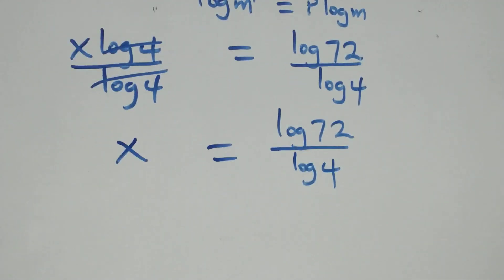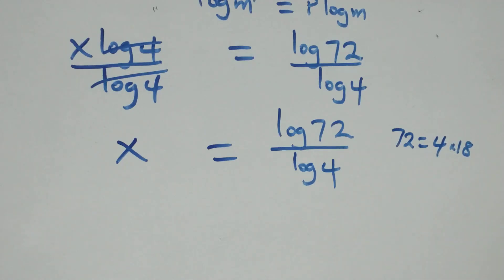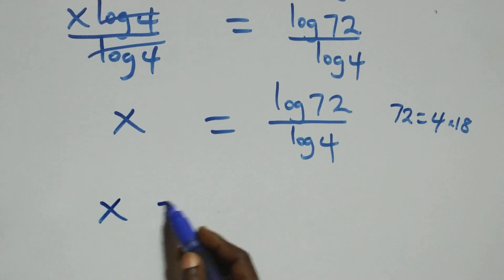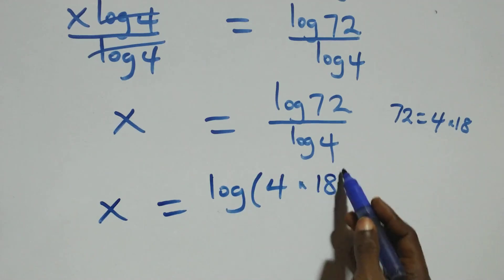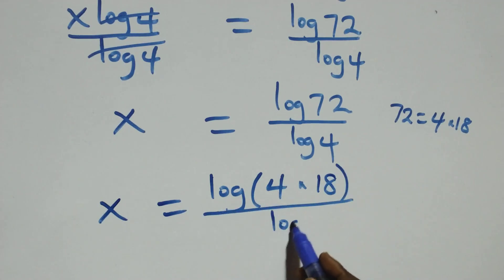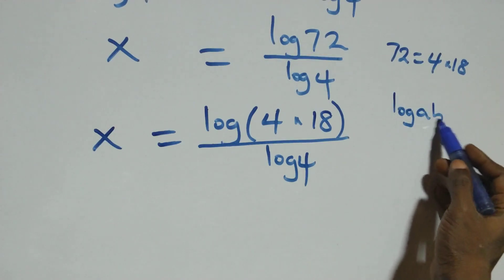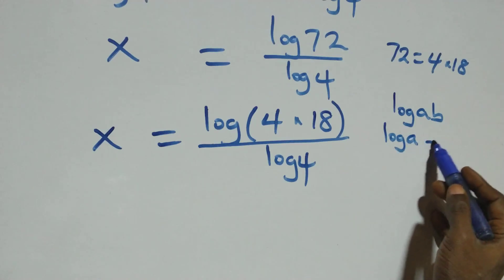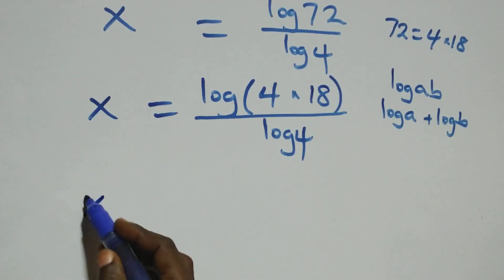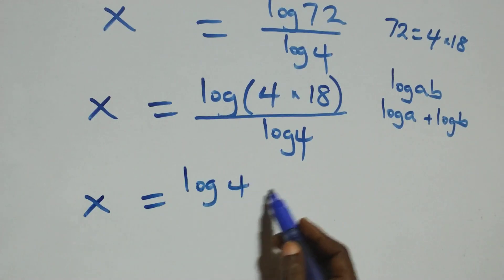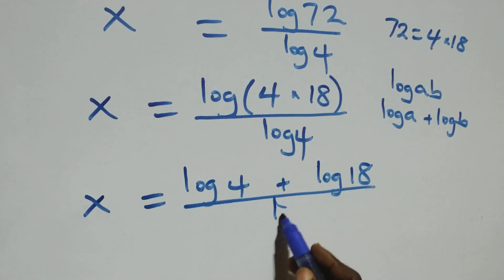The next step here, we can express 72 as 4 times 18. Which implies what we have here becomes x equals to log of 4 times 18 over log 4. This follows a law of logarithm: when we have log a times b, it's the same thing as log a plus log b. What we have here becomes x equals to log 18 over log 4.